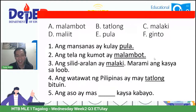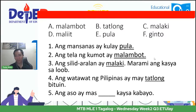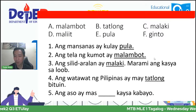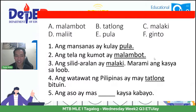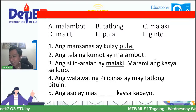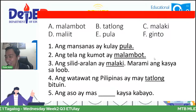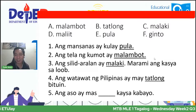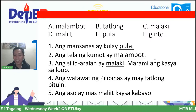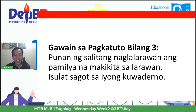Panghuli, ang aso ay mas ___ kaysa kabayo. Sabi ni Christy, D maliit. Sabi ni RV, D maliit. Sabi ni Juwana, maliit. Sabi ni Glen, maliit. Ang tamang sagot ay ang aso ay mas maliit kaysa kabayo. Ang gagaling! Tama ang inyong mga sagot. Palakpakan ninyo ang inyong mga sarili!